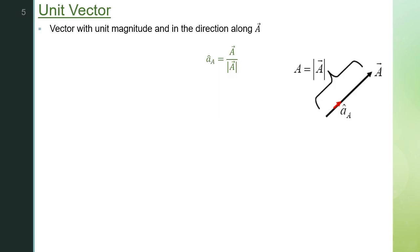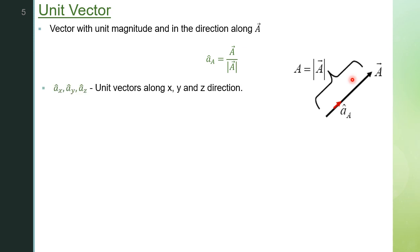Now we will discuss some terms related to vectors. A unit vector is a vector with unit magnitude in the direction of the vector. If you consider a vector A, the unit vector along A is given by A-cap, determined by dividing the vector by its magnitude. In the conventional practice of electromagnetic theory, we take the unit vectors as ax-cap, ay-cap, and az-cap — the unit vectors along x, y, and z direction. These vectors have a magnitude of 1 and lie along the three mutually perpendicular axes in three-dimensional space.